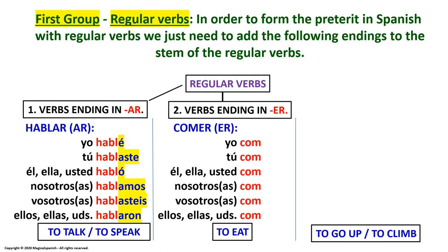The second group of regular verbs ends in ER. The example we have is COMER. So in preterite or in past tense, we are going to conjugate this verb like this: Yo comí. Tú comiste. Él, ella, usted comió. Nosotros, nosotras comimos. Vosotros, vosotras comisteis. Ellos, ellas, ustedes comieron.